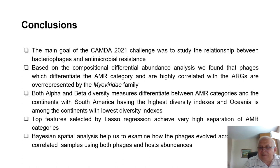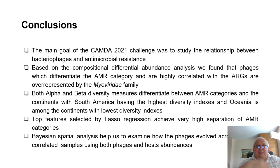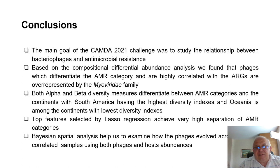Top features selected by LASSO regression — the top or best predictors estimated by LASSO regression — achieve very high separation of the high and low AMR categories. Bayesian spatial analysis helped us examine how phages vary across spatially correlated samples using both phage and host abundances, giving us information about the relationship between phages and host abundances.